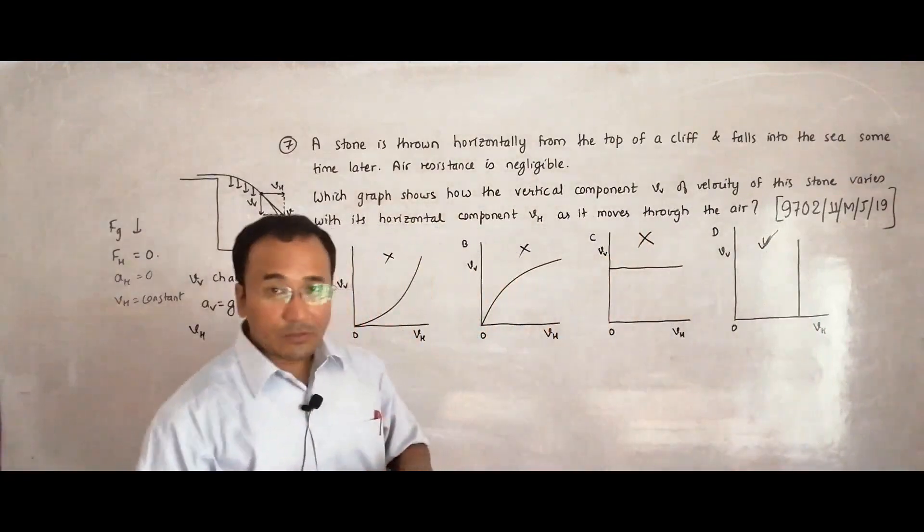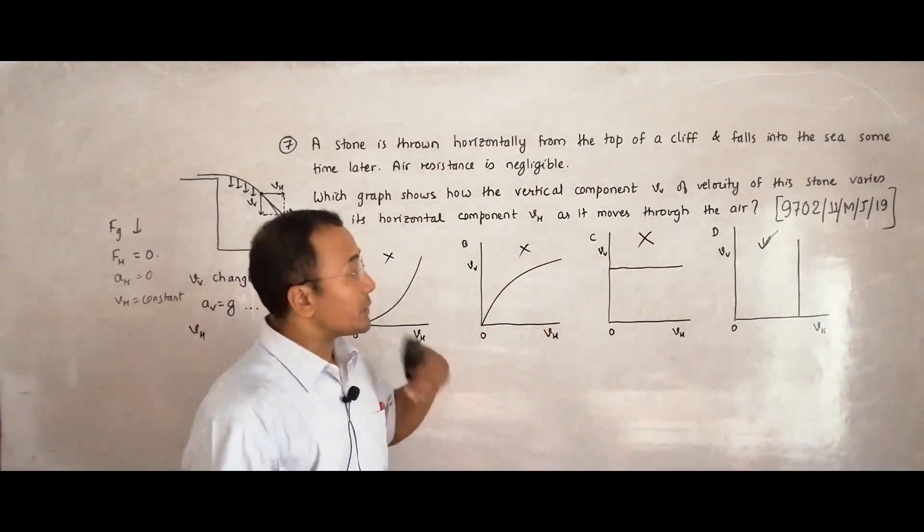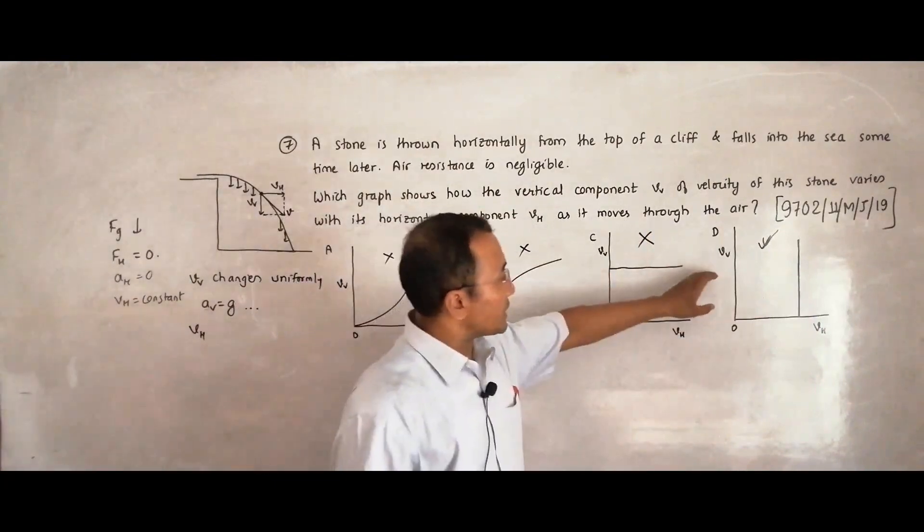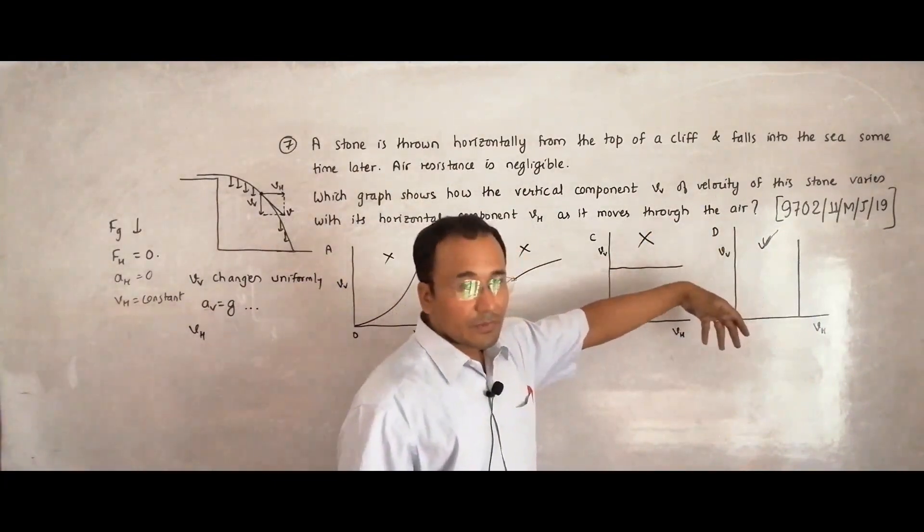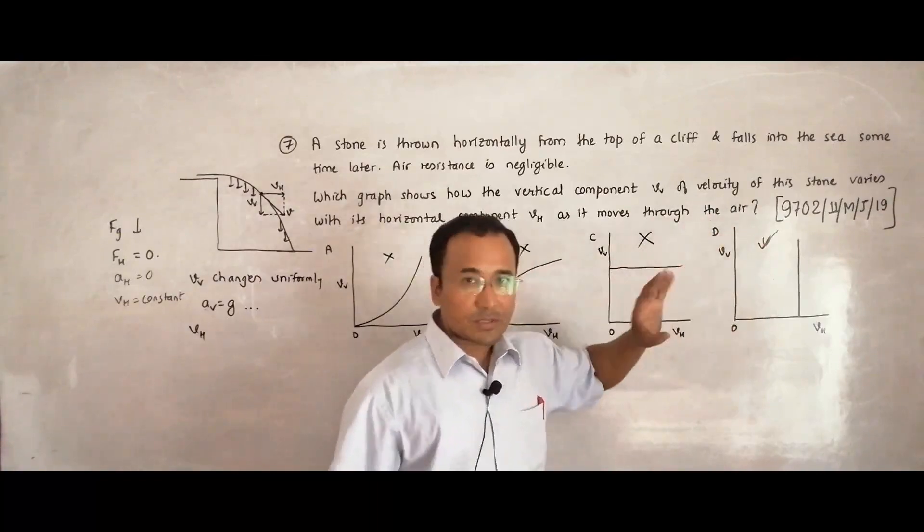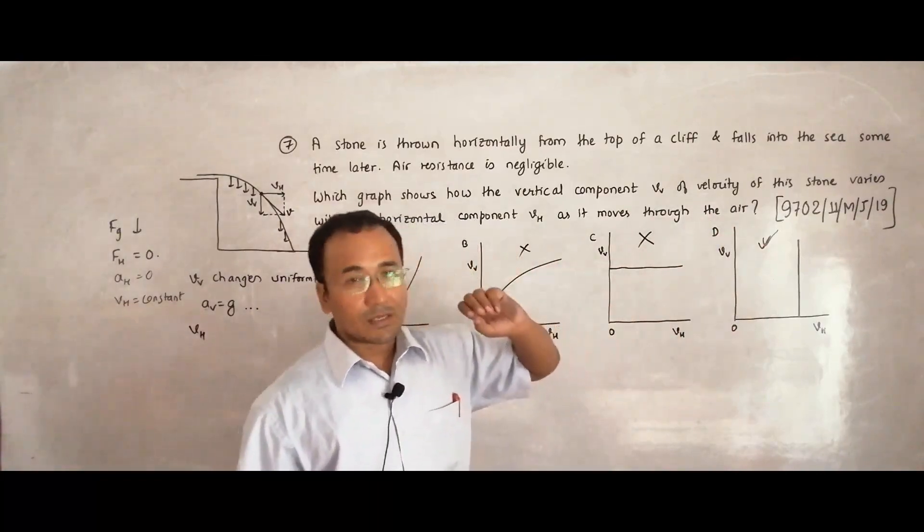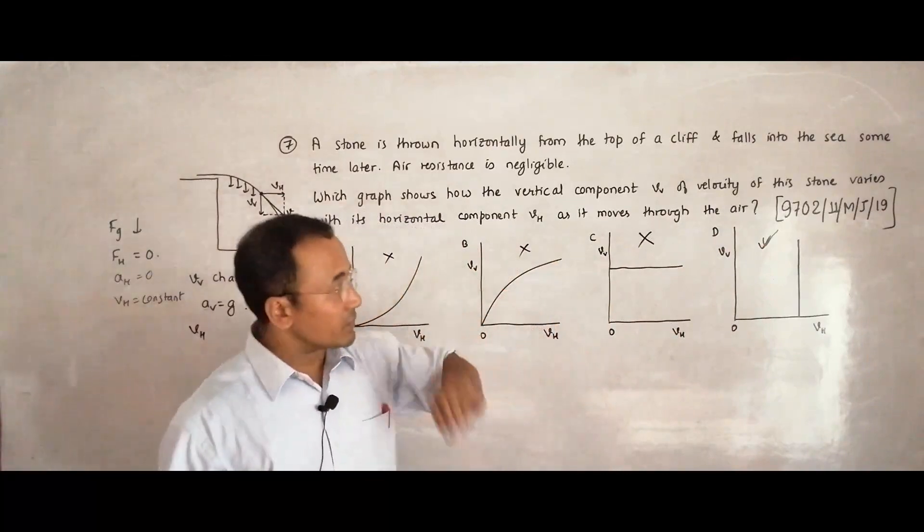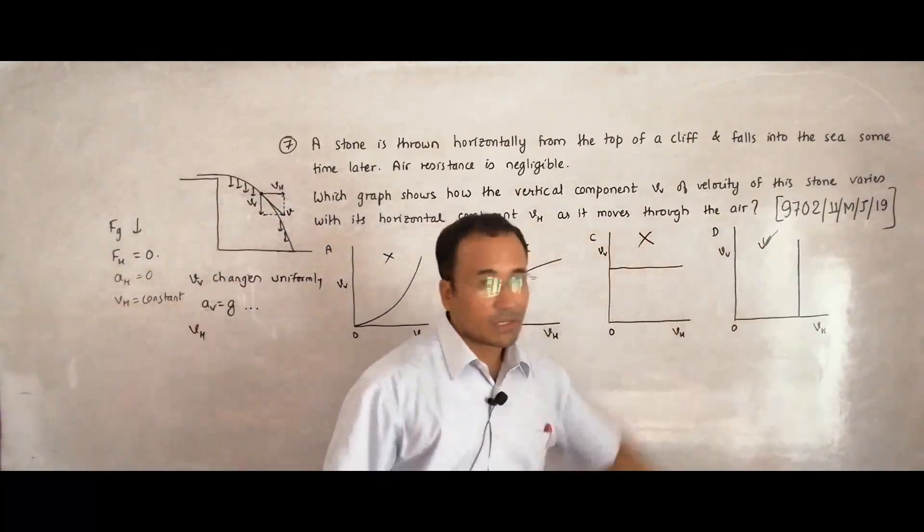So it means, the horizontal velocity changes. Sorry, it remains constant, but the vertical changes. It goes on changing. Whether up change or positive change or negative change. Increased degrees, no concern. The only thing is that, the horizontal velocity remains constant. So choice number D should be the correct choice.